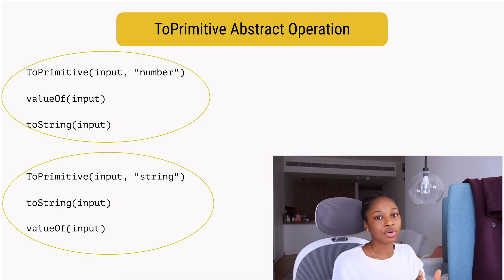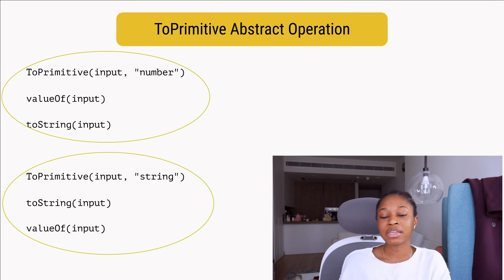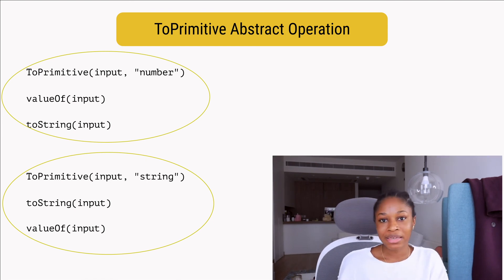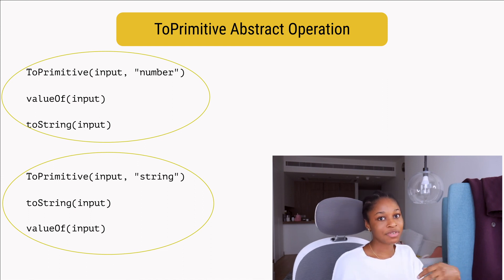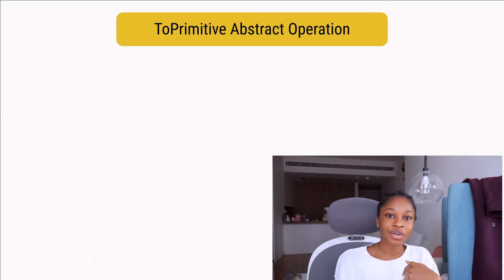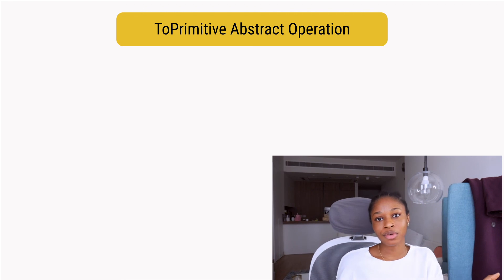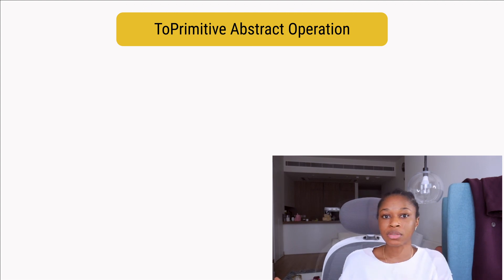Another important thing to note is that these algorithms within JavaScript are inherently recursive. This means that if ToPrimitive is invoked and doesn't return a primitive, it will keep getting invoked until it returns a primitive — or in some cases, an error.